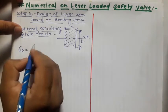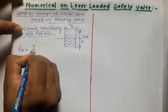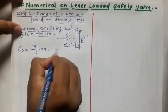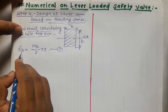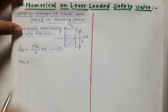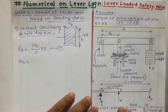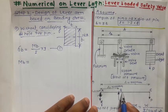The bending stress equation for the lever arm cross-section without considering the hole for the power pin is M equals sigma times I divided by Y — equation number 1. The permissible bending stress is assumed as 60 MPa. We now determine the maximum bending moment MB. Looking at the diagram, we find the bending moment at points A, B, and C, and select the maximum out of these three.